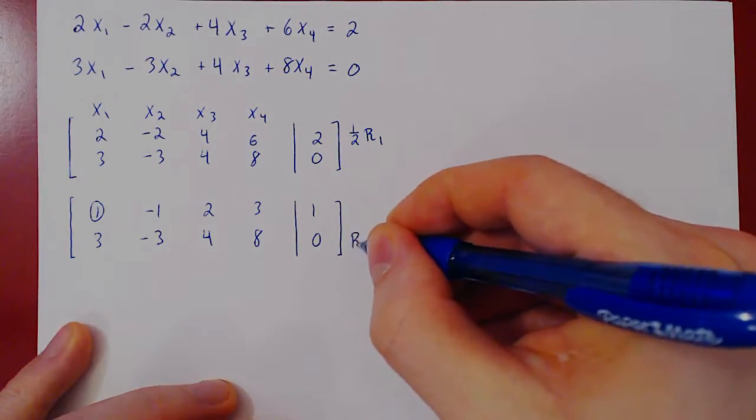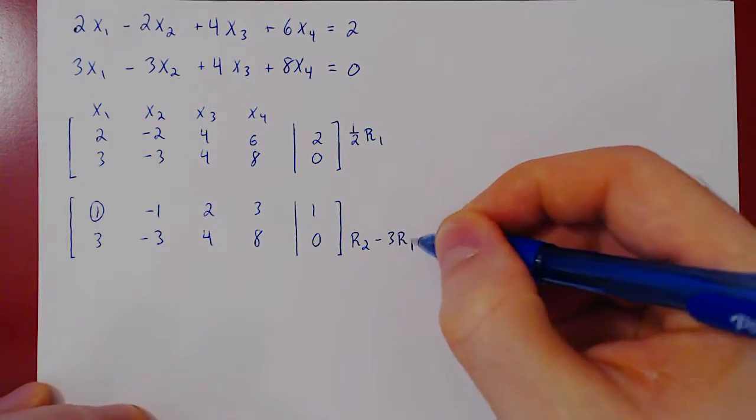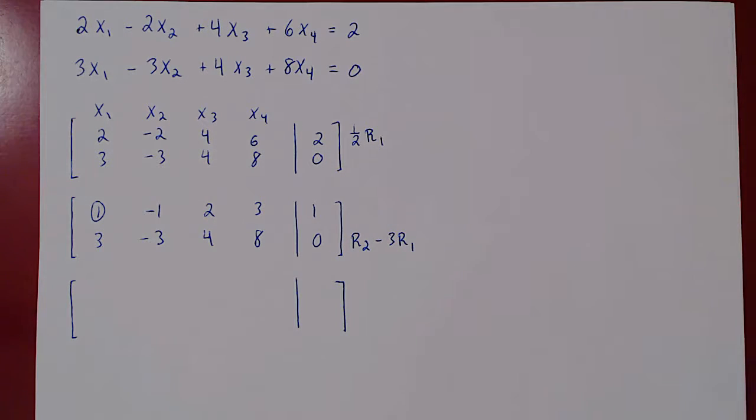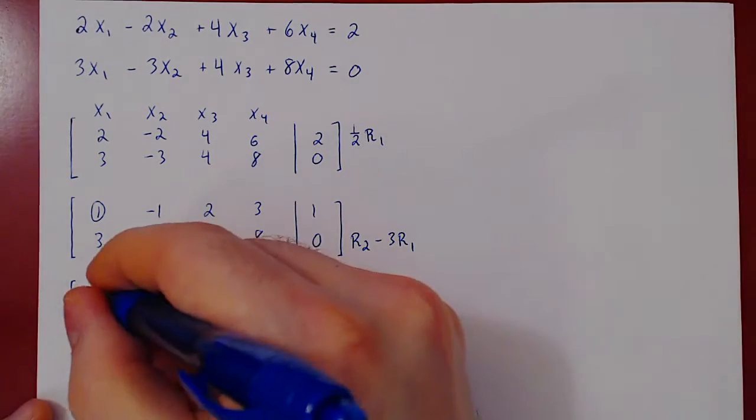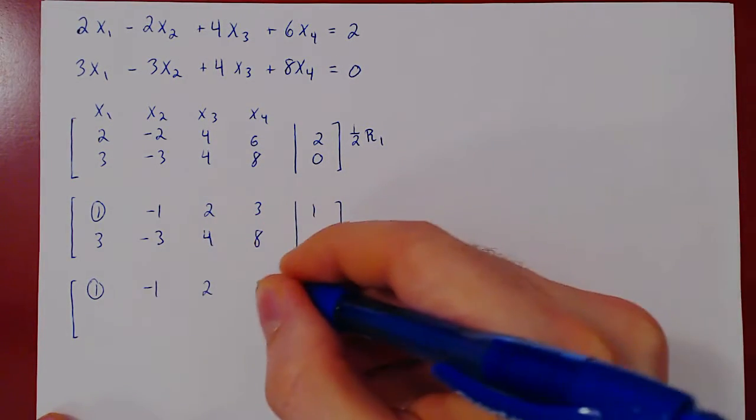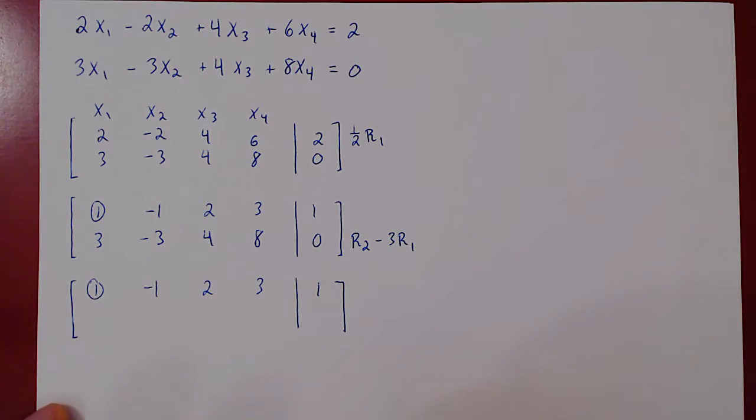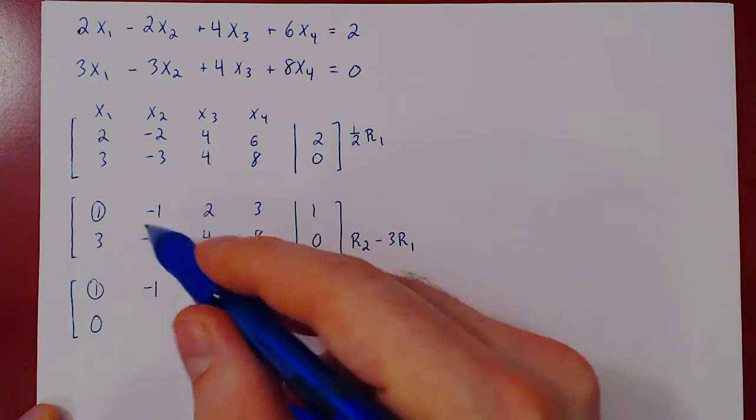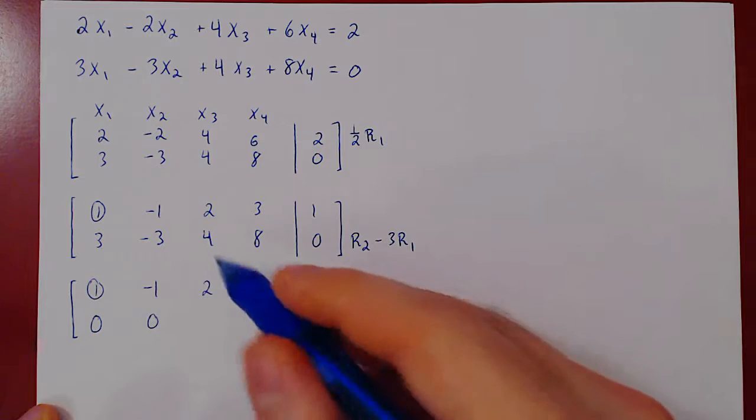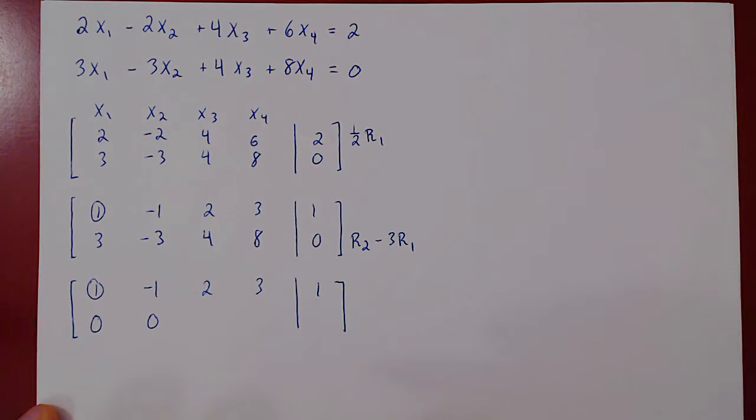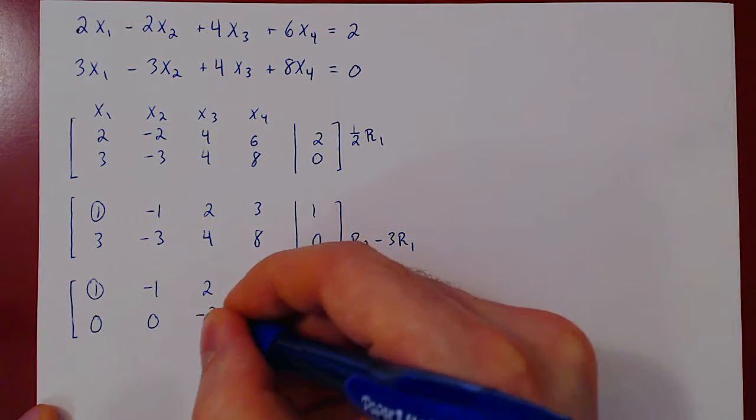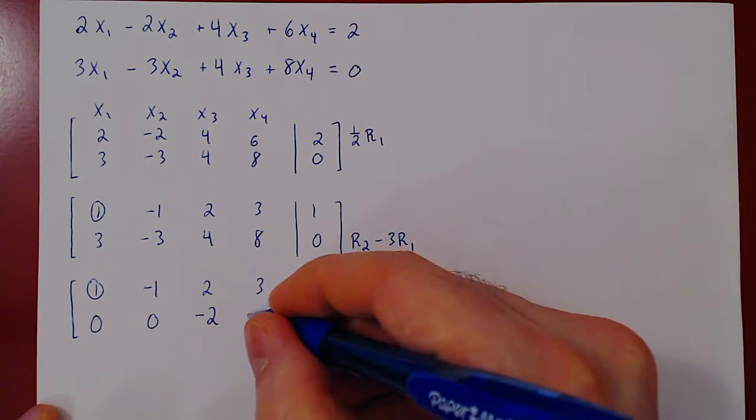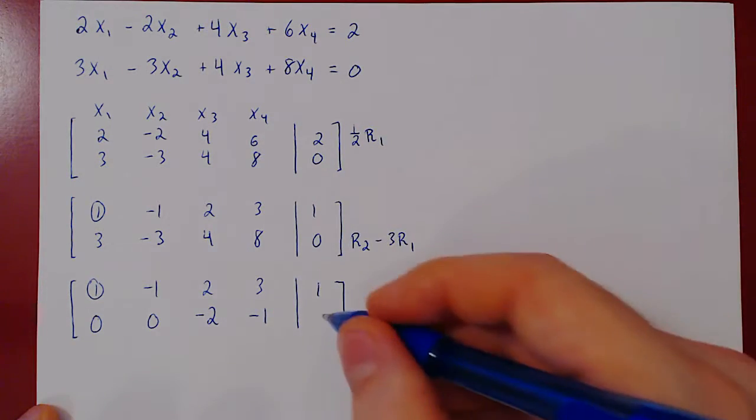We'll kill the entry below it by doing row 2 minus 3 row 1. Recopy row 1, as we are not changing it. Let's apply the row operation. 3 minus 3 is 0. Negative 3 minus 3 times negative 1 is plus 3, gives us also 0. 4 minus 3 times 2, 4 minus 6, negative 2. 8 minus 3 times 3, 8 minus 9, negative 1. And 0 minus 3 times 1, 0 minus 3, negative 3.